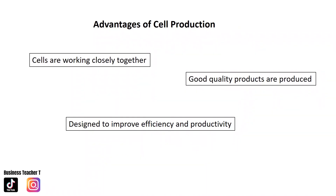Advantages of cell production: cells work closely together, so team working is strongly encouraged, offering long-term benefits. Good quality products are produced as cells work together to ensure a high level of quality throughout the process. Cell production was designed to improve efficiency and productivity. Within the teams, cells communicate with each other to discuss issues and improve quality, which may lead to further improvements in efficiency and productivity.